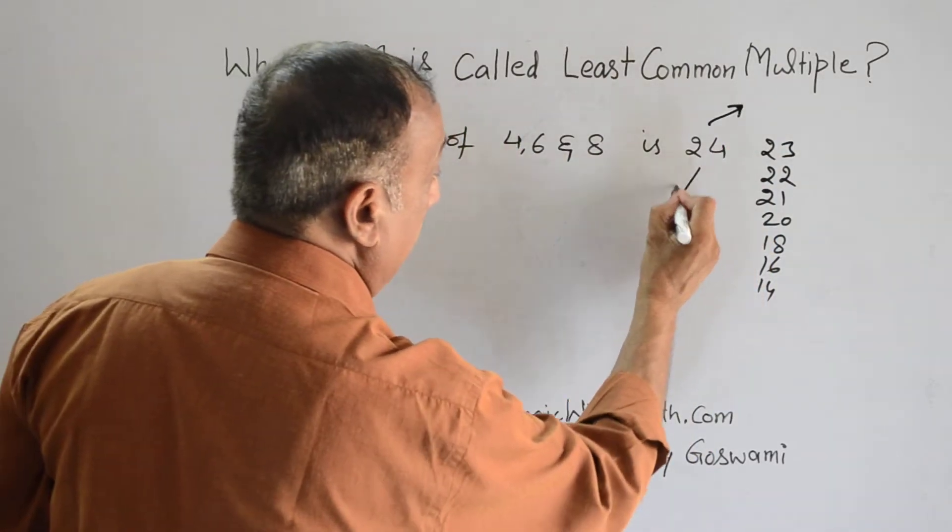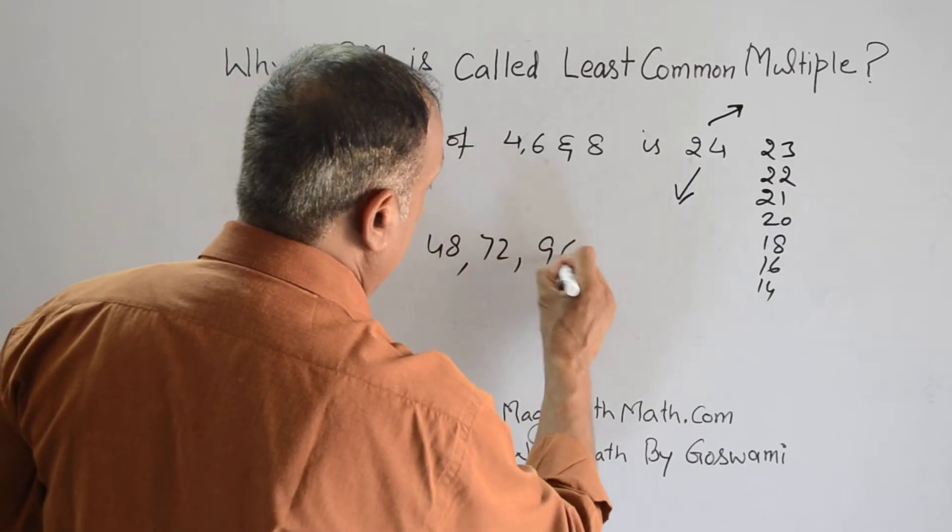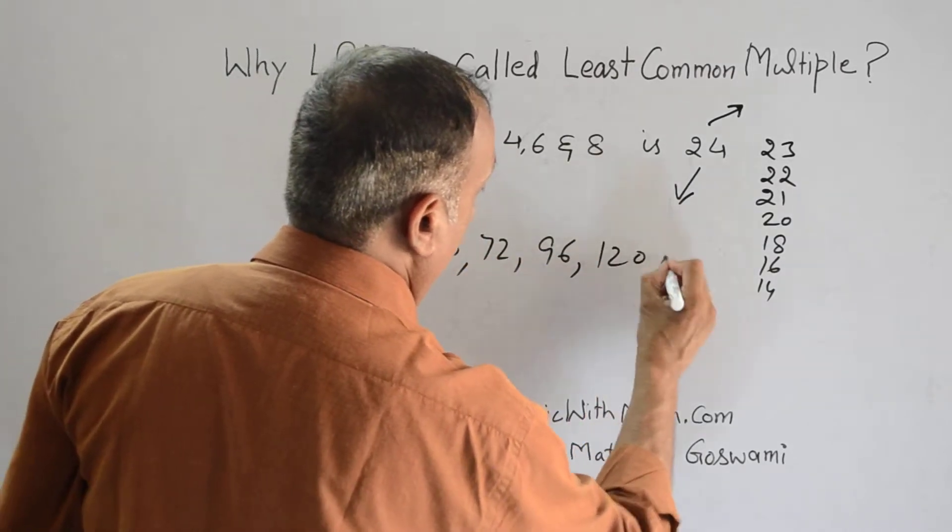All the multiples of 24—that would be 48, that would be 72, that would be 96, 120, 144.